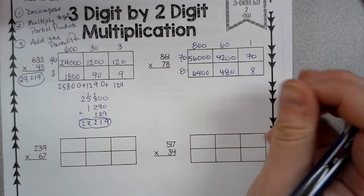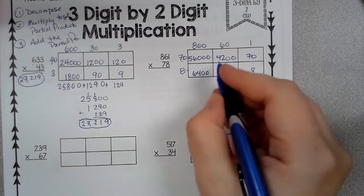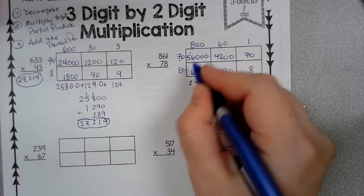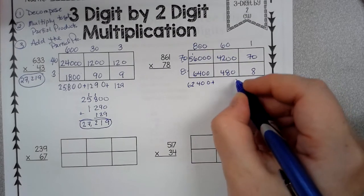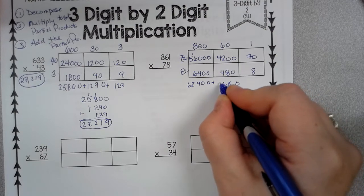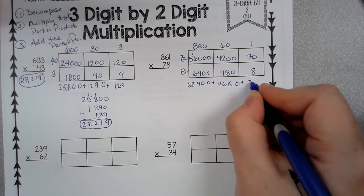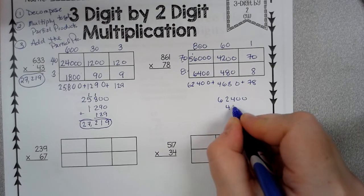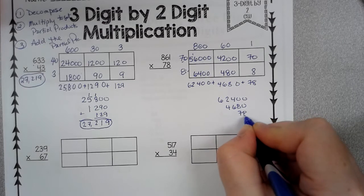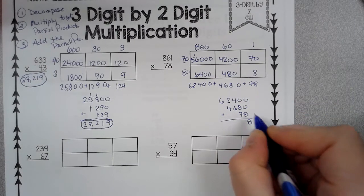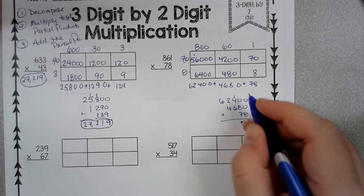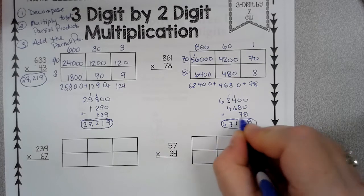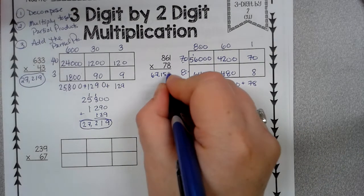So we're going to add. So we've got 0, 0, 0, 4, 12, 6, plus 0, 8, 6, 4, plus 78. So just line these up. 8, that's 15, that's 10, 11, 6, 7, 5, so 67,158.